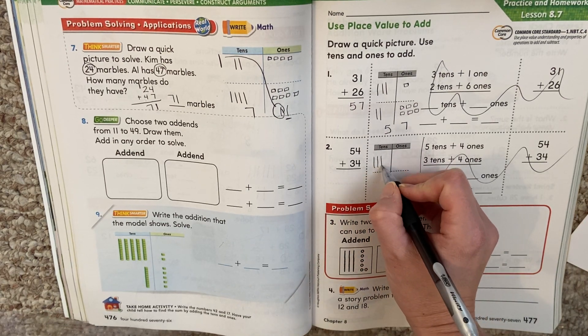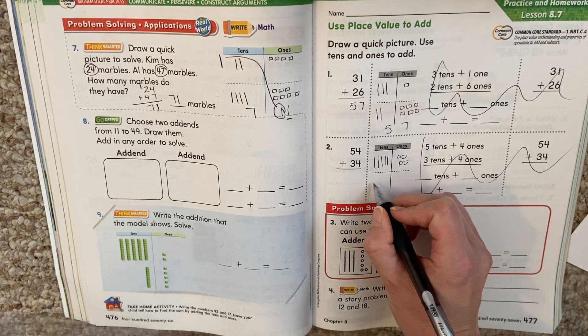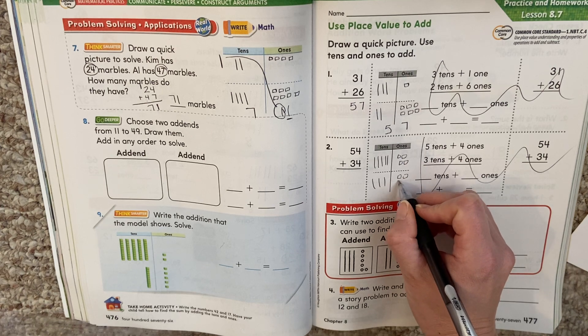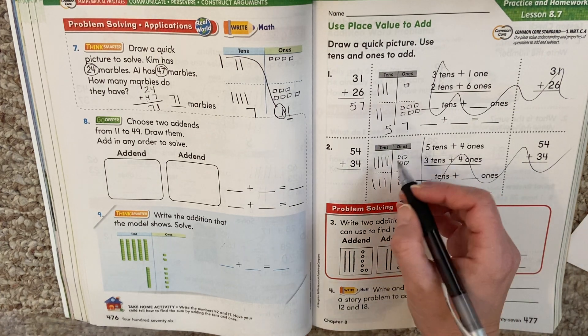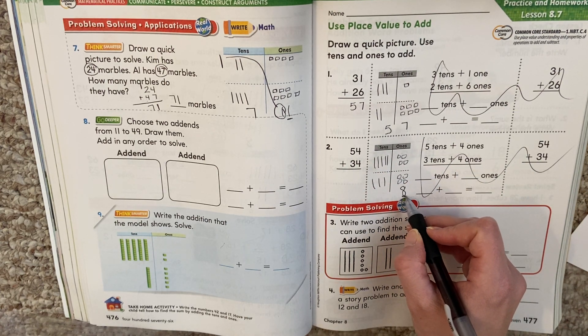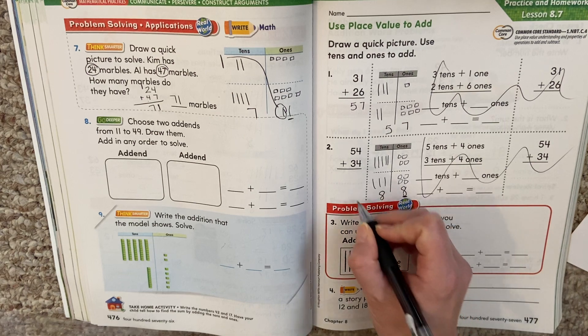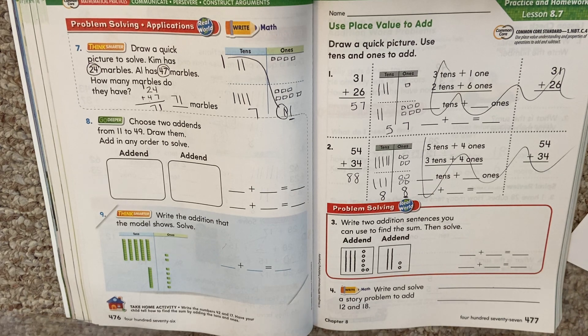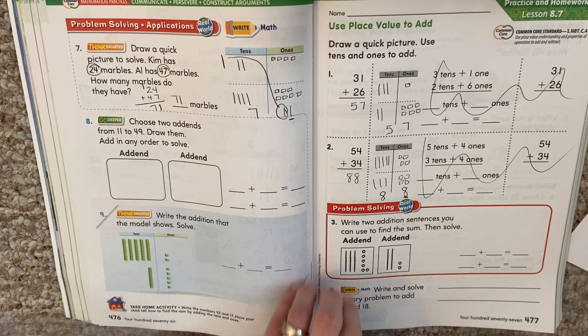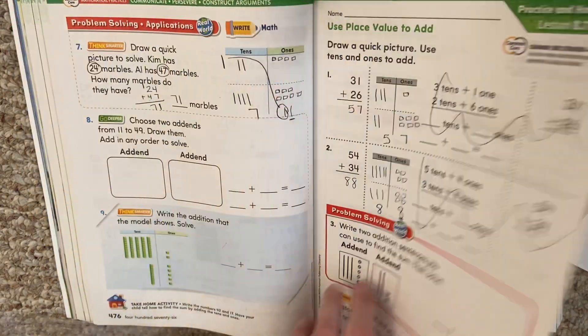How did you do on this one? Fifty four. You should have had five tens. Four ones. Three tens. Four ones. When you counted these all, you got eight. And that's a single number, so it's okay. One digit number. Five and three. You should have gotten eight. So your answer was eighty eight.